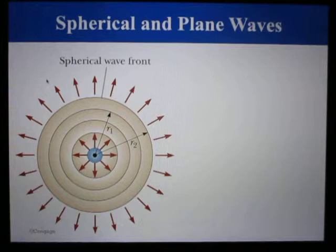This means that no one direction is preferred over any other. If P_av is the average power emitted by the source, then at any distance r from the source, this power must be distributed over a spherical surface of area 4πr², assuming no absorption in the medium.